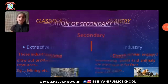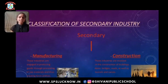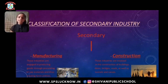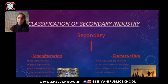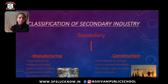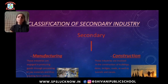Let's move to the classification of secondary industry. Secondary industries are classified into two main parts: manufacturing and construction. Manufacturing industries are engaged in producing goods through processing of raw materials, creating form utilities, and involve many processes for utilizing raw materials. Construction industries are involved in the construction of buildings, dams, bridges, roads, tunnels, and canals, and mainly involve architecture and engineering.